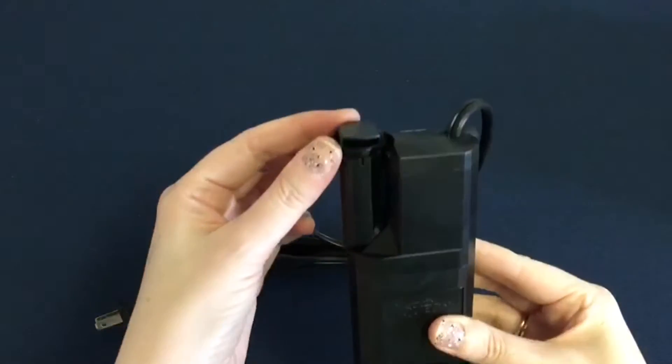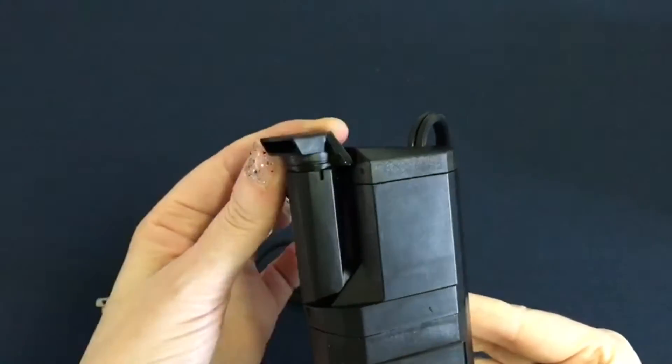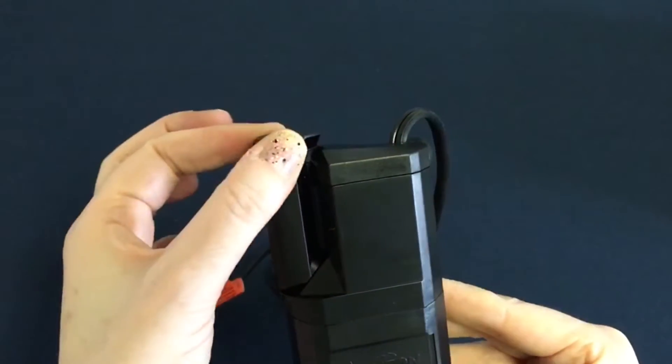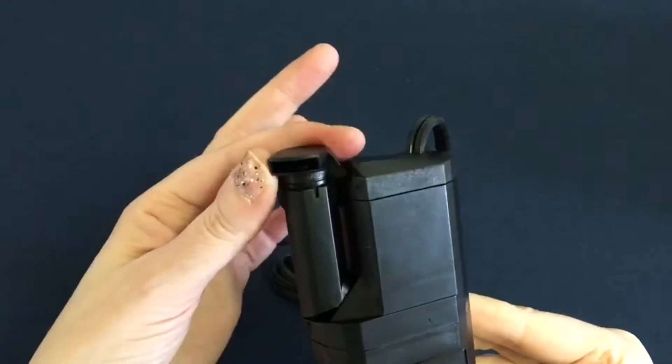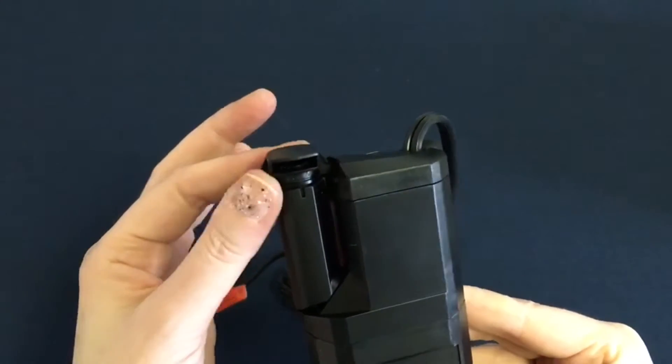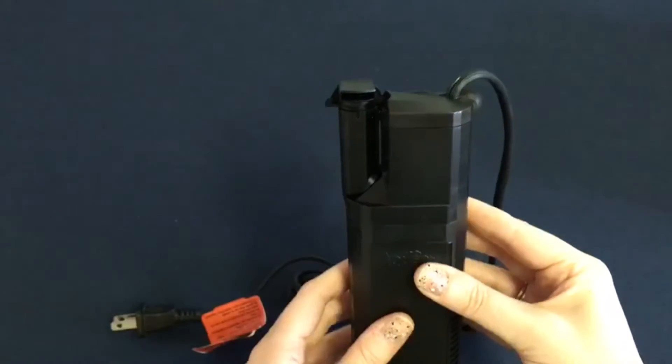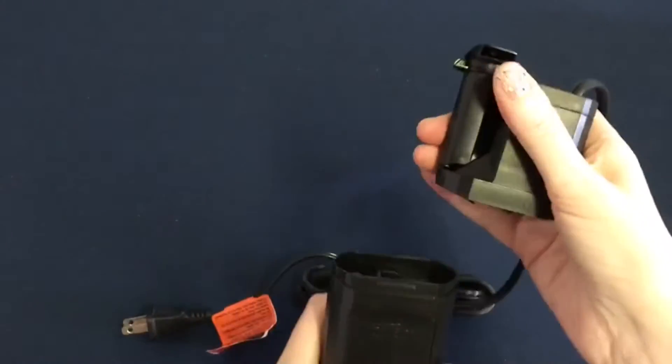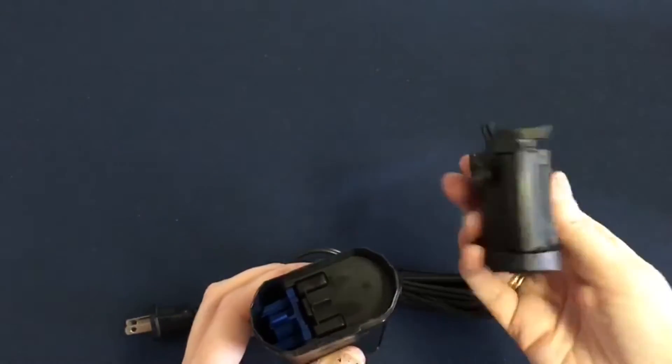The power head will actually swivel so that you can direct the flow of water where you want it to go. It also has a little wheel under that that will give you an adjustable flow rate so you can decide how powerful you want the water flow to be.